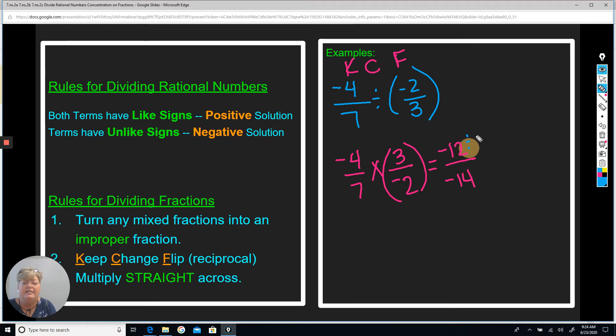So I can go ahead and simplify this down, divide by 2. And that's going to give me negative 6 over negative 7, which ends up being just 6 over 7. It is a positive.